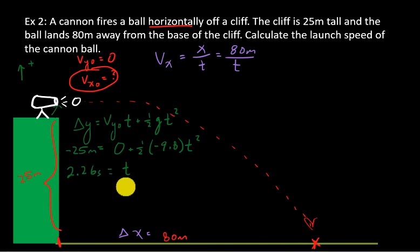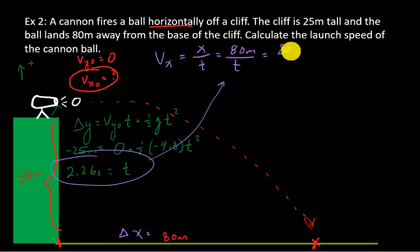So that's how much time it took to fall downward. Again, therefore, that's the amount of time it has to travel horizontally. This here is going to be my time right there. So that's going to equal 80 meters divided by a time of 2.26 seconds. Punch that into your calculator. 80 divided by 2.26, I get an initial horizontal velocity of 35.4 meters per second.